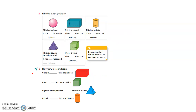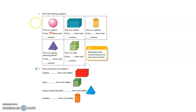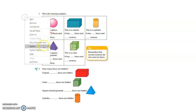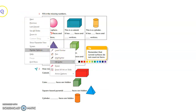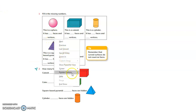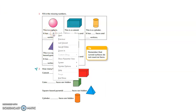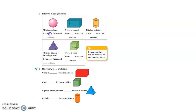This is a sphere. It has no faces and no vertices — no flat surface means no face, and no meeting point means no corner. A sphere has 0 faces and 0 vertices. We will write those numbers in the table.